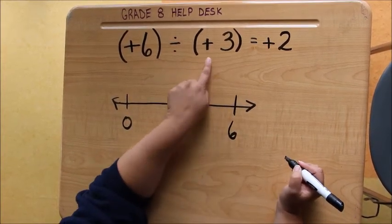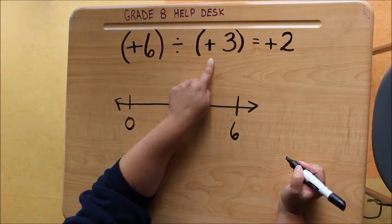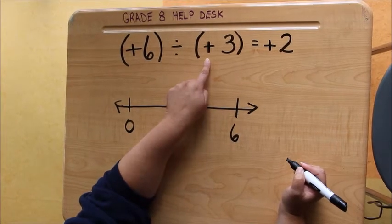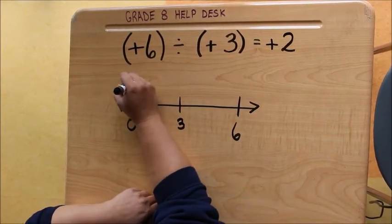Our divisor also tells us if we're going to jump forwards or backwards. In this case our divisor is positive, so we are going to jump forwards.